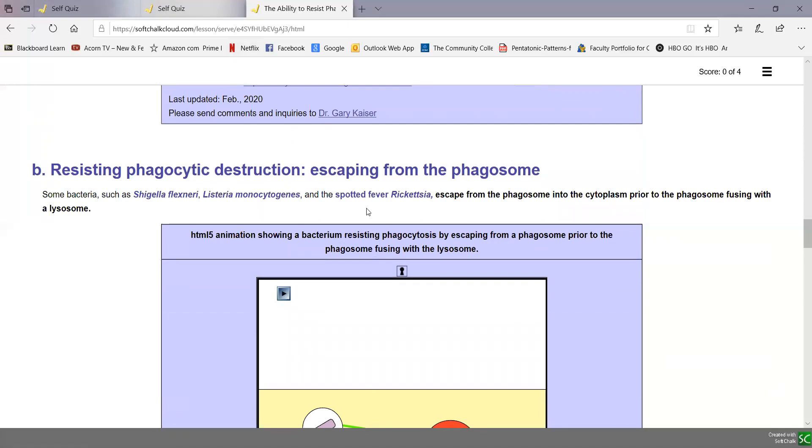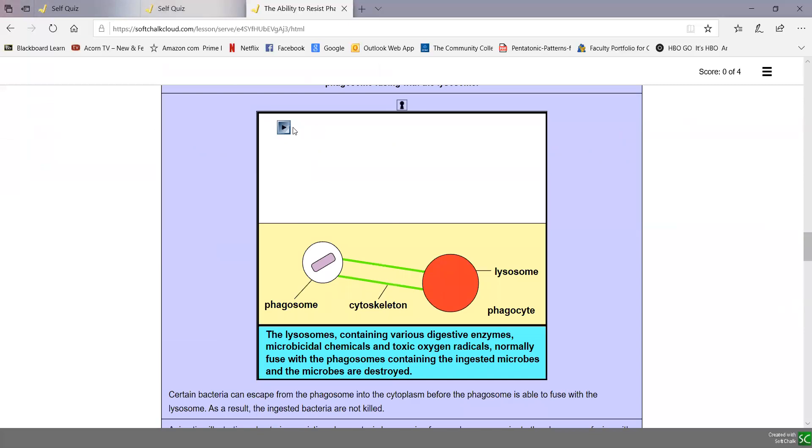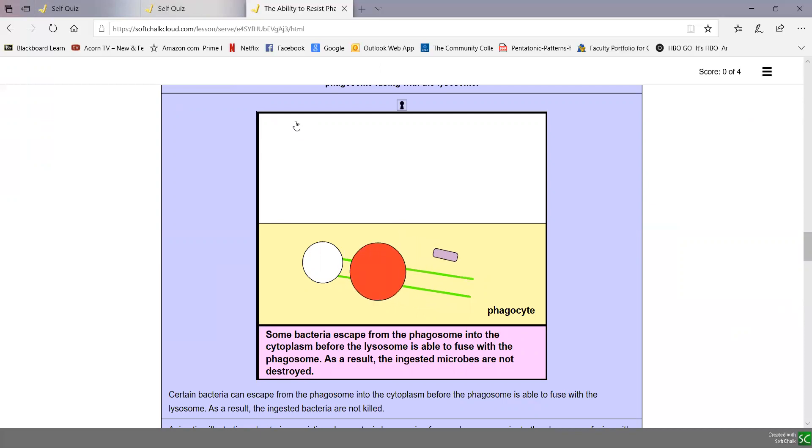Another way is that some bacteria actually escape from the phagosome before the lysosome ever fuses. Shigella flexneri that causes dysentery, Listeria monocytogenes that causes foodborne infections, and Rocky Mountain spotted fever Rickettsia escape from the phagosome into the cytoplasm prior to the phagosome and lysosome fusing, as we see in this animation. We see some bacteria escape from the phagosome and by the time the lysosome gets there, the bacteria are out in the cytoplasm replicating.